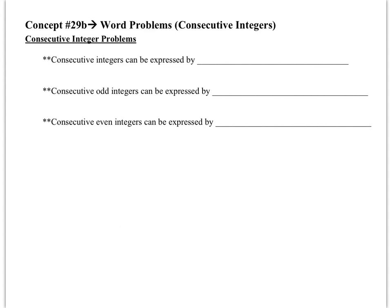Continuing on with word problems today, we are going to talk about consecutive integer word problems. The word consecutive is going to be a clue about what our labels will always be. So let's take a minute to look at what the word consecutive means. Consecutive means one after the other. Consecutive integers can be expressed by certain labels, so let's talk about consecutive integers for a second.